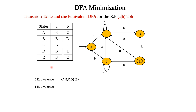Next, we have to find the one equivalence. One equivalence means we have to check the set. We have to find the pair AB and check the transitions on input A and B. So, if we see A on A and A on B, it is BC. B on A and B on B, it is BD. So, since BCD are all available in this set, we consider that A and B are one equivalent and we represent them as a set.